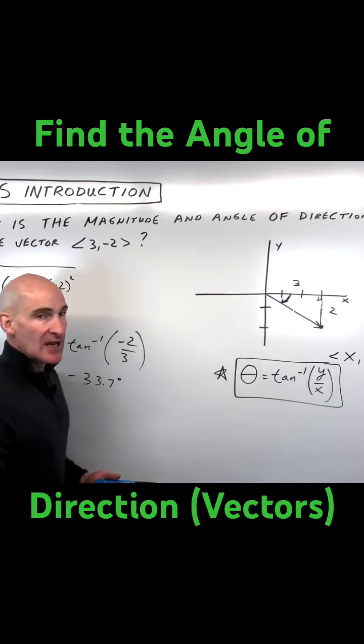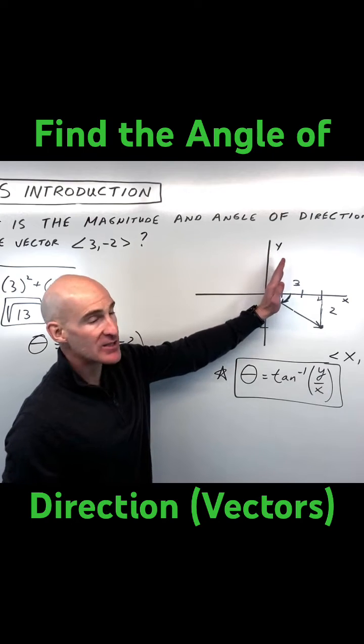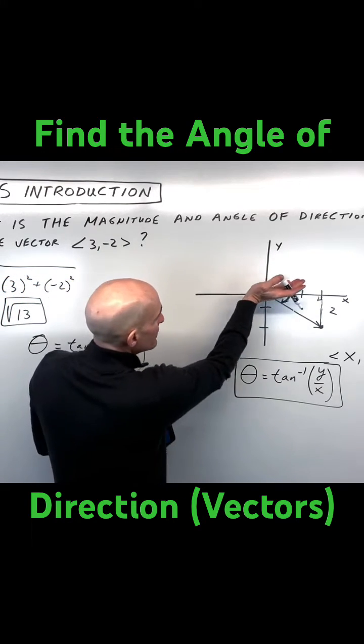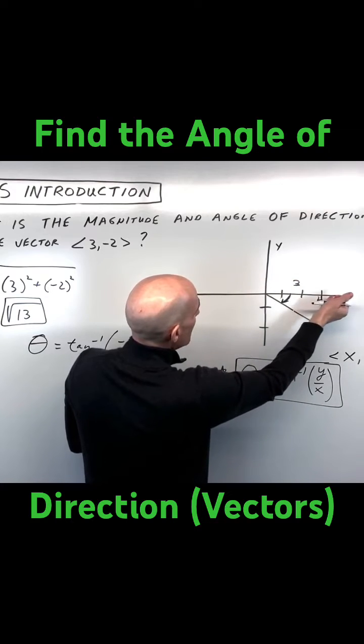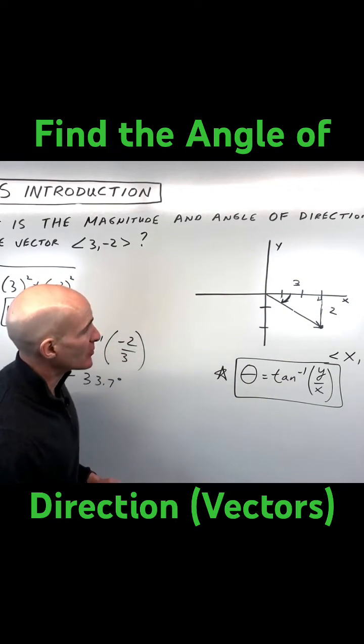Now remember when you do the tan inverse it's always going to give you an angle from negative 90 to positive 90. Now we generally measure angles, we start with the positive x direction and we rotate counterclockwise if it's a positive angle.